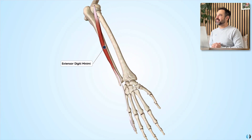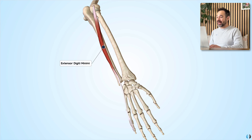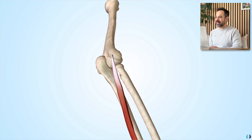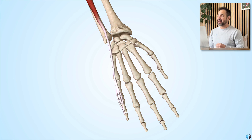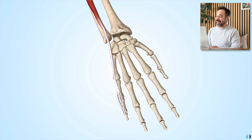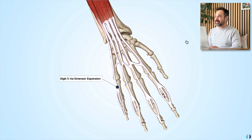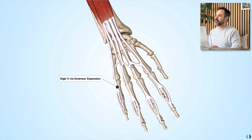We then have extensor digiti minimi. This muscle also originates from the lateral epicondyle and runs down the forearm posteriorly. With 'digiti minimi' in its name, we can see that it inserts into the fifth digit — via the extensor expansion network created by extensor digitorum. We can see how these two muscles blend together to extend the fifth digit.